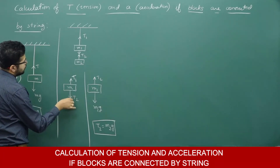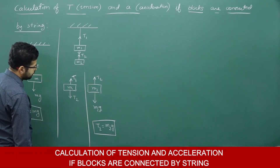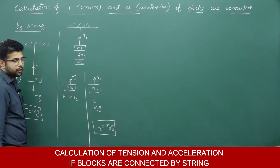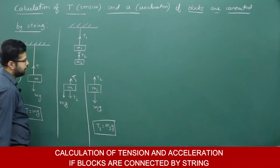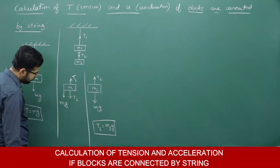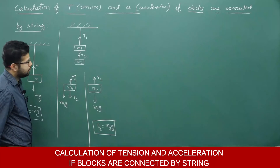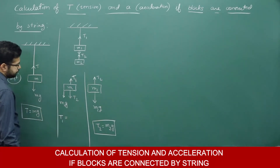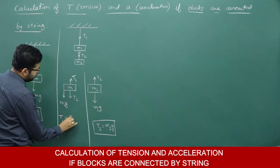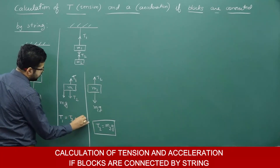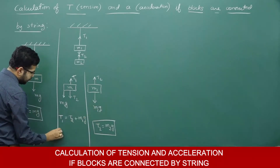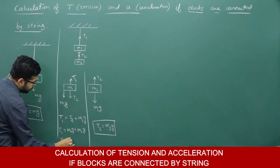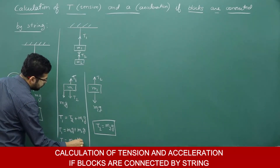On m1, T2 is acting downwards — T2 is m2g — and the weight of m1, which is m1g, is also acting downwards. Since m1 is in equilibrium, I can write T1 equals T2 plus m1g. What is T2? T2 is m2g. So T1 equals m1g plus m2g, or T1 equals (m1 + m2) times g.